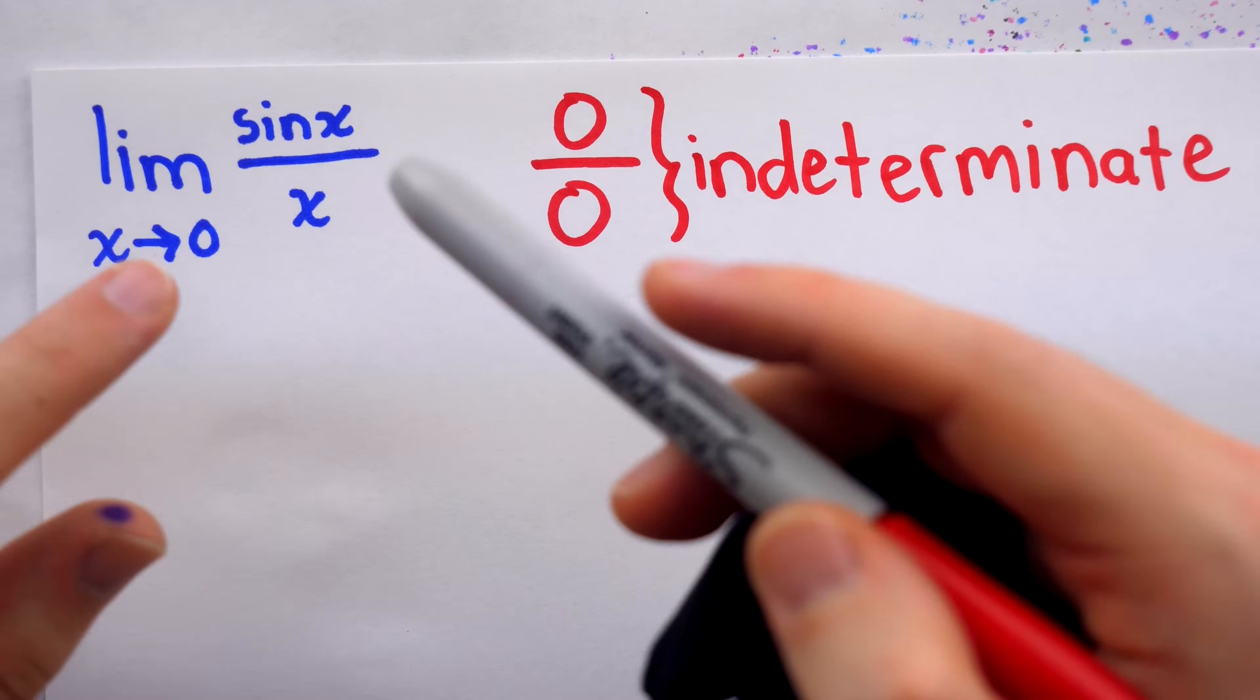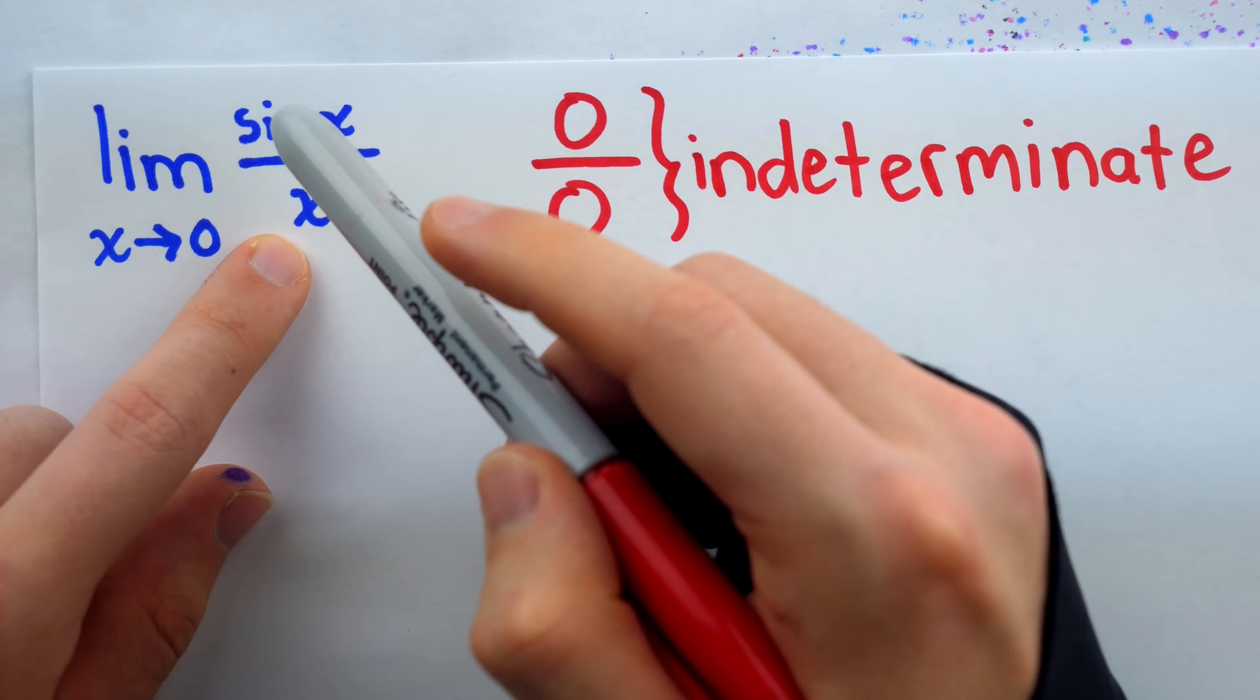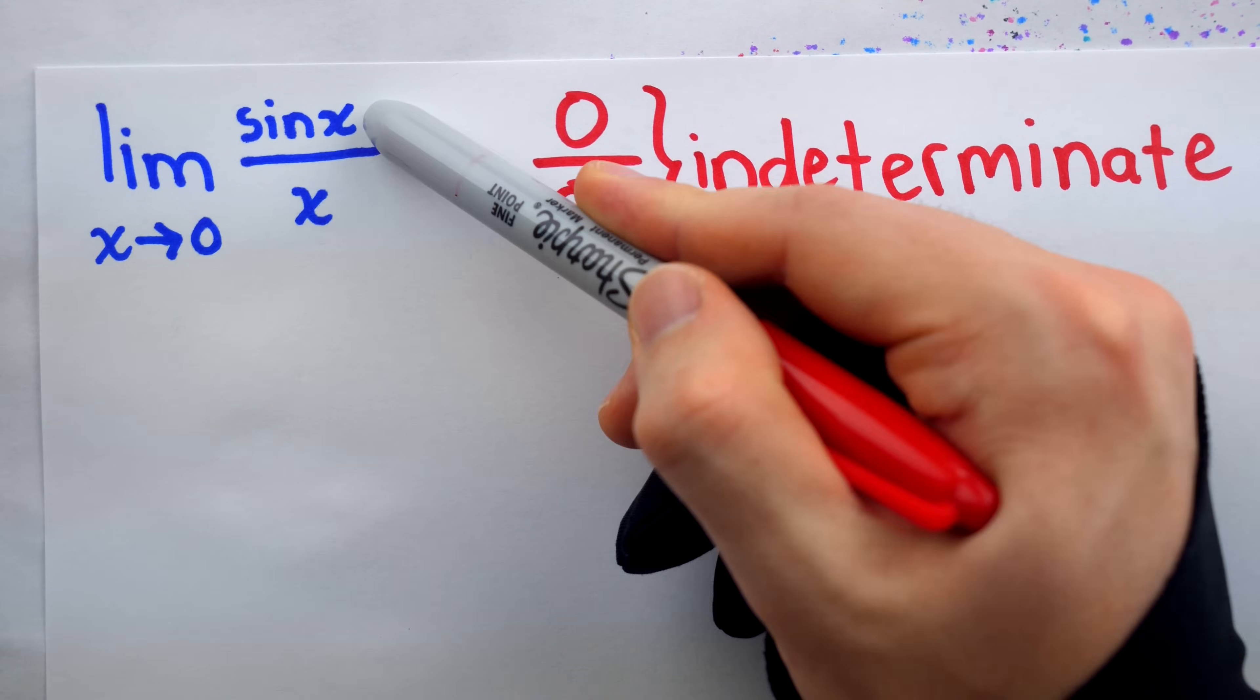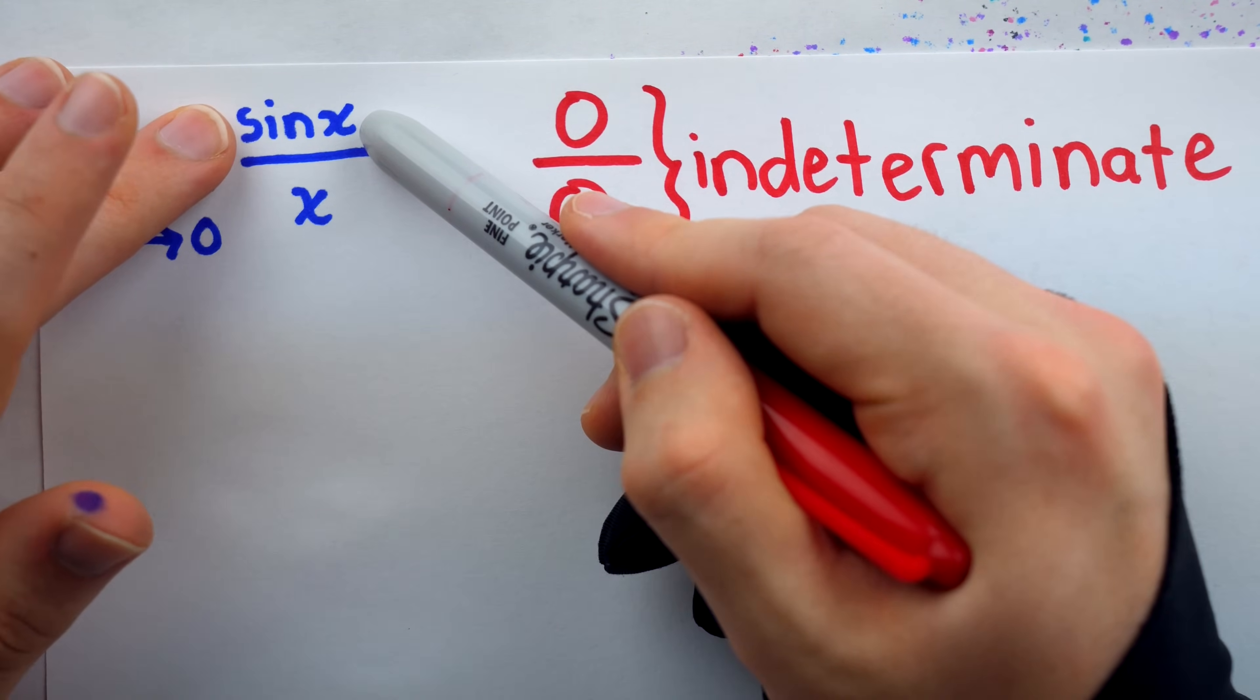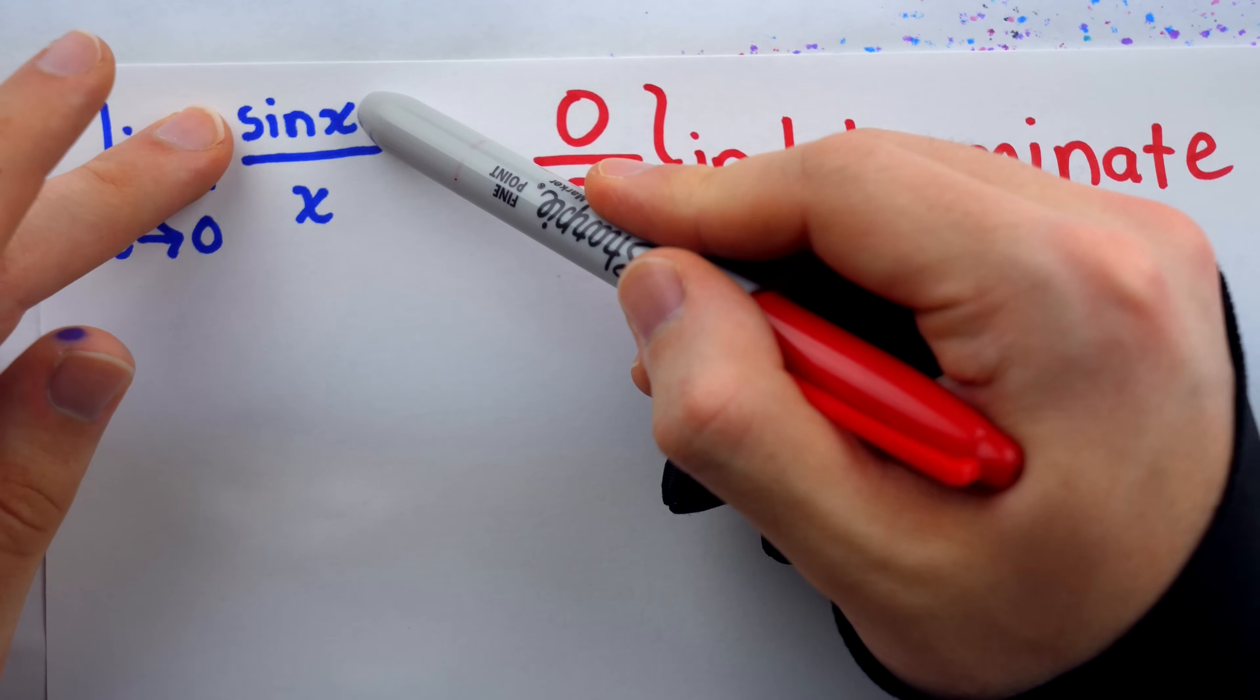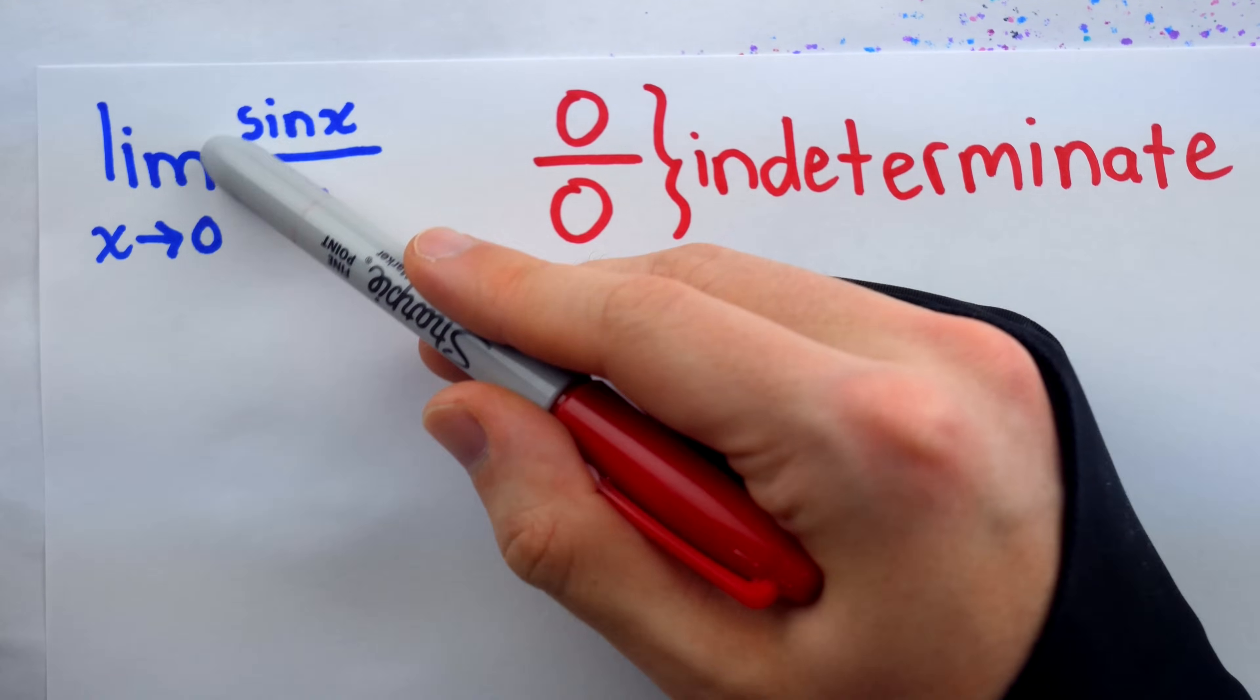Because it could be that x approaches zero really, really fast. So maybe this is actually infinity, because sine x might be really big relative to x, even though sine x is getting smaller and smaller. On the other hand, sine x could approach zero way faster than x does, and so maybe this fraction approaches zero.